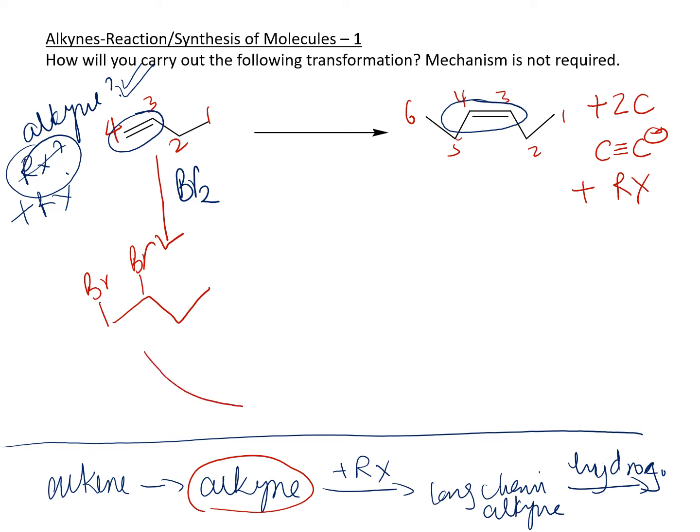And now I can do elimination on that. And so the elimination that I will do is going to be by using a strong base. So excess of NaNH2, that should work. And that will give me the alkyne that I need.